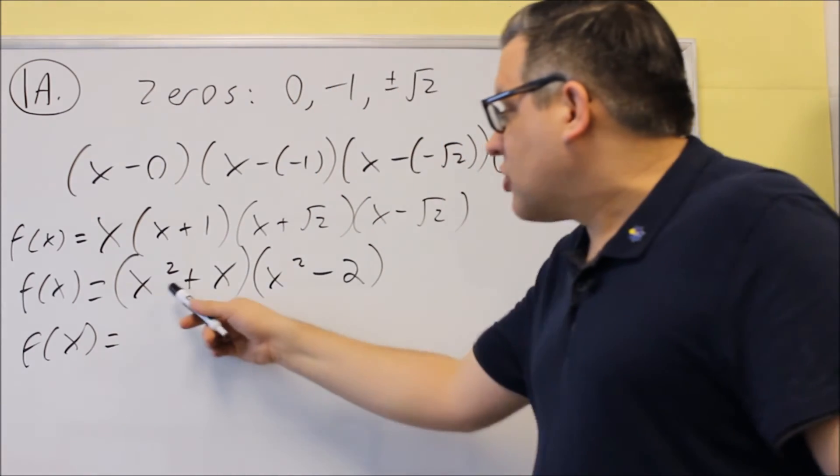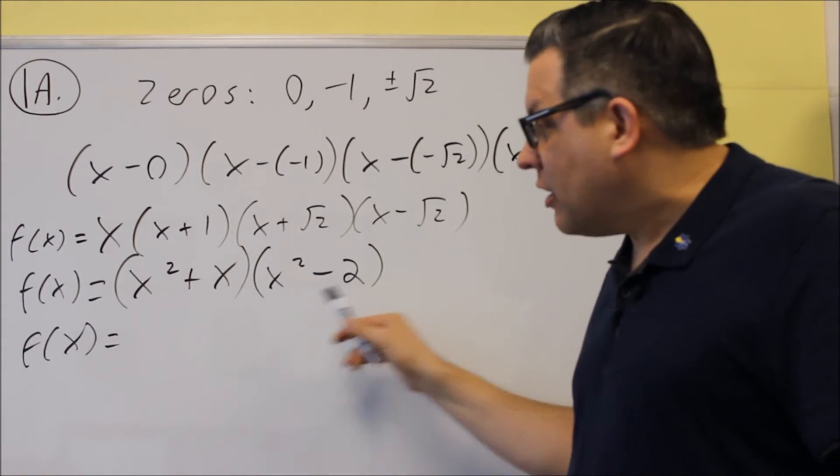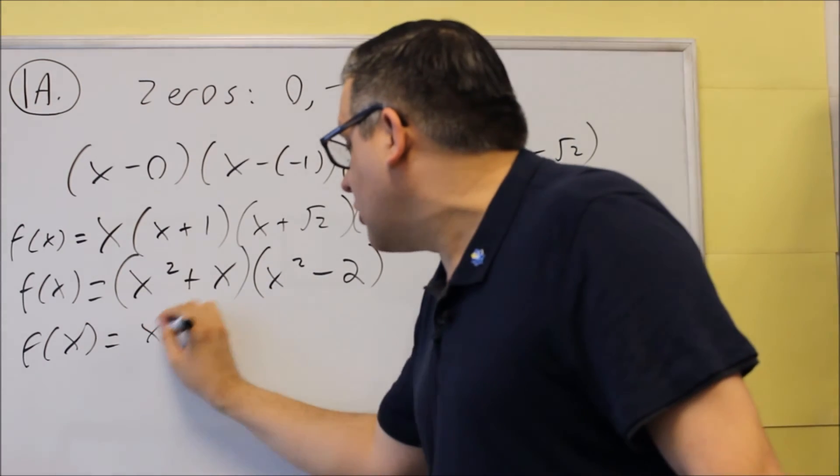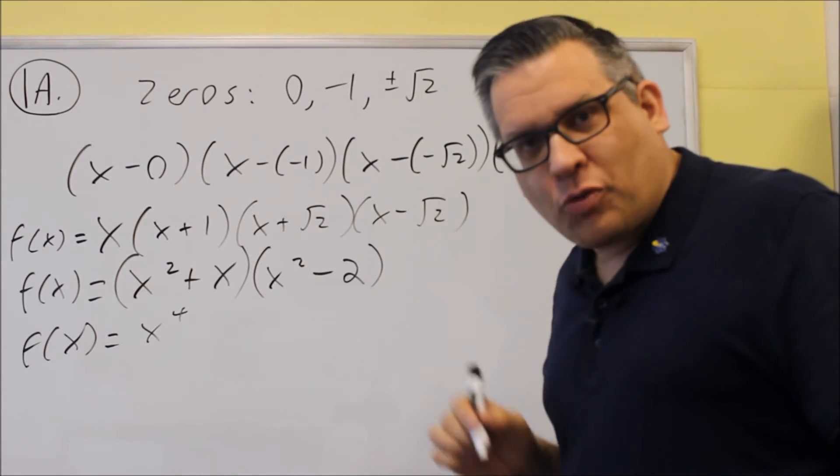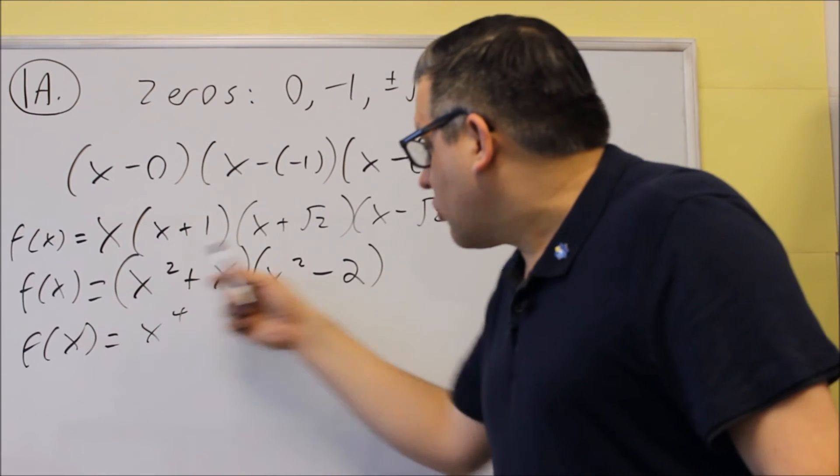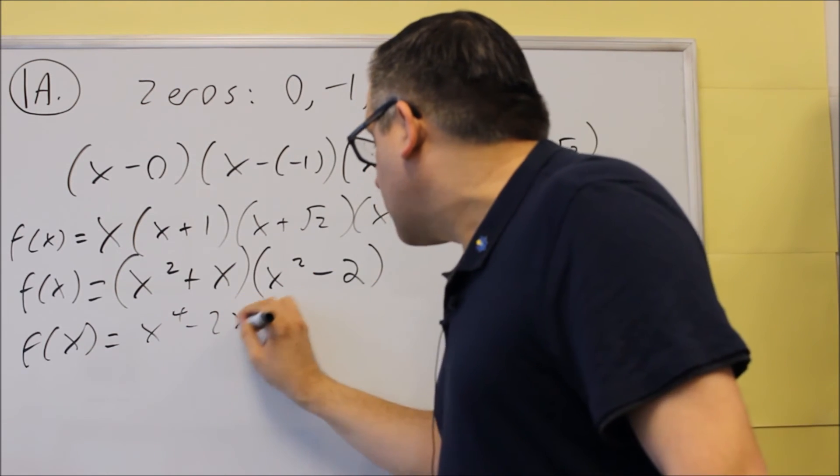Okay, so we have x squared times all the things inside here, then x times everything inside here. So x squared times x squared is x to the fourth. There's our fourth power that we're looking for to get to the degree 4 polynomial. x squared times negative 2, negative 2x squared.